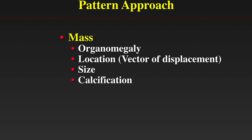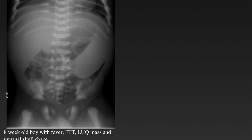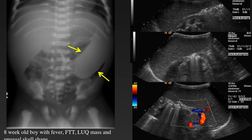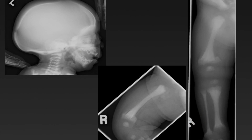Now let's shift attention to an evaluation of masses — meaning both the presence of a mass and/or organomegaly. We assess location based on the vector of displacement of normal structures, size, and the presence of calcification or fat. Here we have an eight-week-old boy with fever, failure to thrive, a left upper quadrant mass, and an unusually shaped skull. The radiograph shows a very enlarged spleen confirmed by ultrasound, with dense bones showing no distinction between cortex and medullary cavity — osteopetrosis with splenomegaly related to extramedullary hematopoiesis.